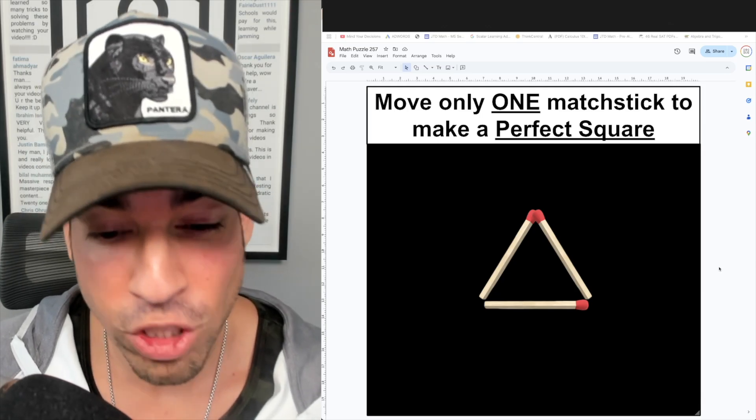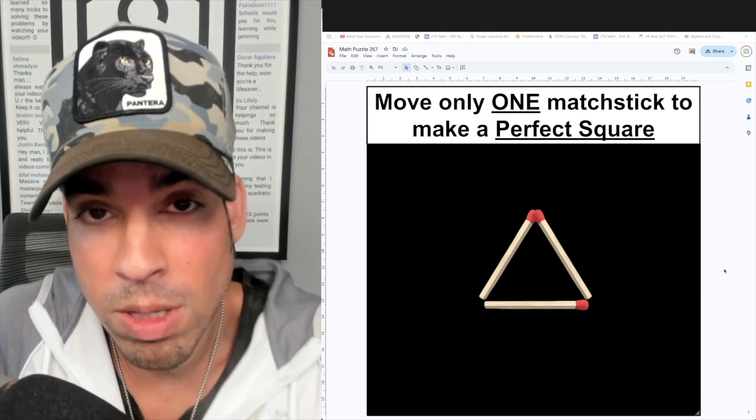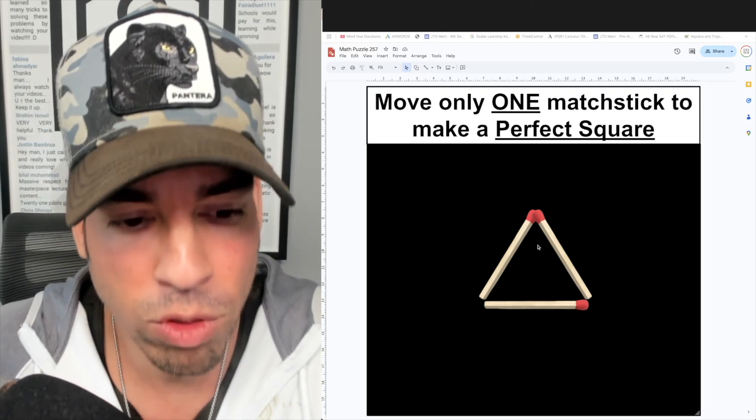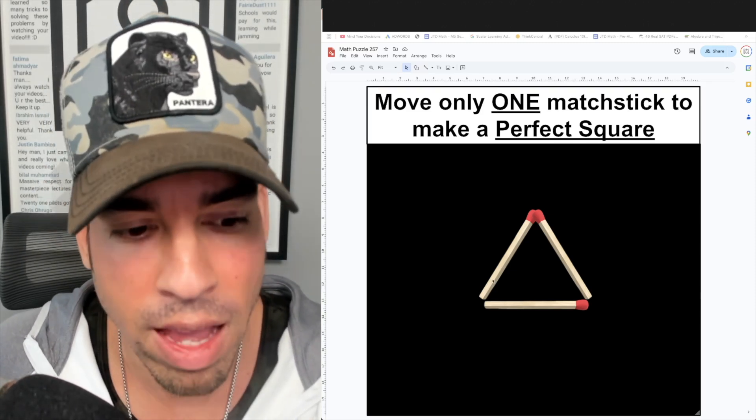So at first glance, this question is really sneaky, right? To make a perfect square, first of all we need four sides, right? So we only have three matchsticks here, so that's quite difficult. And again, the angles are off—we need 90 degree angles.